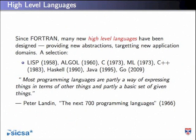This is an interesting observation made by Peter Landin way back in 1966. Has anyone read 'The Next 700 Programming Languages'? If you haven't, I would suggest you go and read it — it's a great piece of programming language research history. One thing he said, possibly the opening sentence, is that most programming languages are partly a way of expressing things in terms of other things, and partly a basic set of given things. If we can come up with some generic way of describing things in terms of other things and then give a specific set of given things, that specific set is basically our domain knowledge — that's how we write domain specific languages.